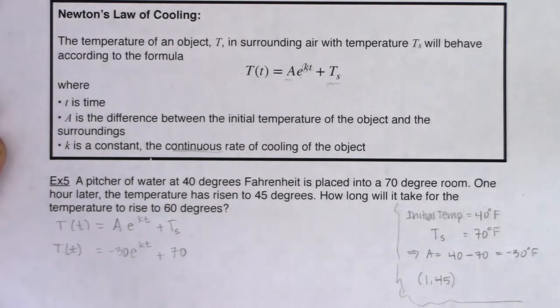So taking a look, I know my A value is negative 30. I knew T sub S was 70. So that just leaves me wanting to find my K value, but I have an ordered pair to help me do that.